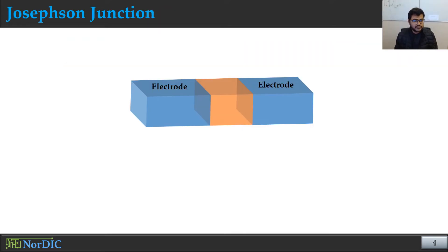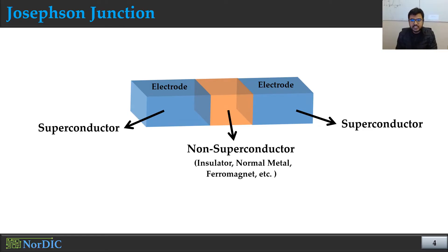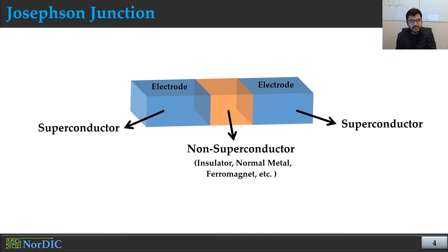Now let's talk about Josephson Junction devices. This is a two-terminal device where we have two electrodes separated by a barrier material. These two electrodes are superconducting materials — they can be the same material. The barrier material is anything except a superconducting material, so we can use any non-superconducting material: an insulator, normal metal, ferromagnet, ferroelectric, or any other non-superconducting material.